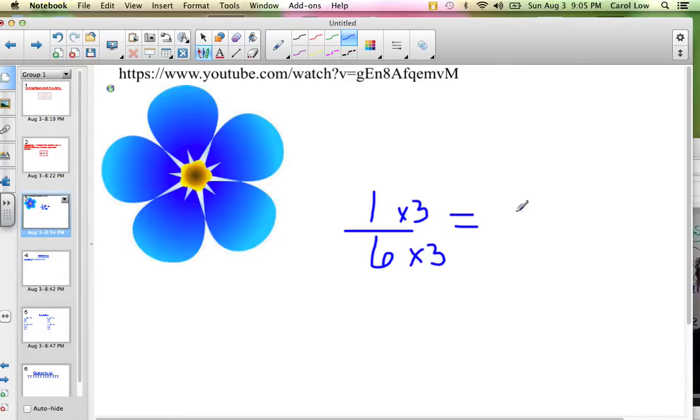Mr. Lau, what's 1 times 3? 3. And Mr. Lau, what is 6 times 3? 18. So 1/6 equals 3/18ths.